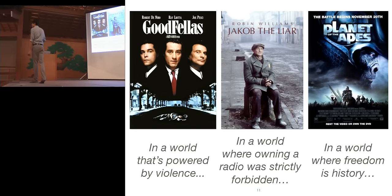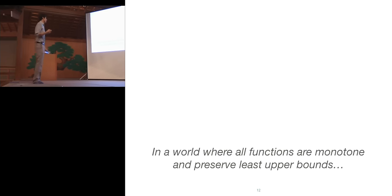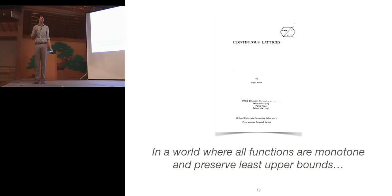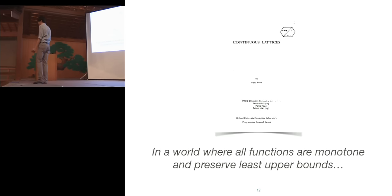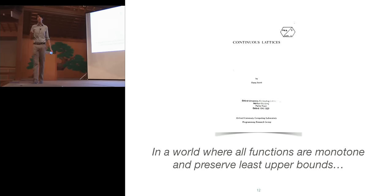'In a world where all functions are monotone and preserve least upper bounds' is kind of the trailer for Dana Scott's seminal work on interpreting lambda calculus in CPOs. The thing I want you to appreciate is that if you're used to thinking about programs as existing only in sets — where a type is a set of values and functions just transform those sets — you're going to have to get out of that way of thinking. Even recursive programs are not sets; they're in a different world: CPOs.